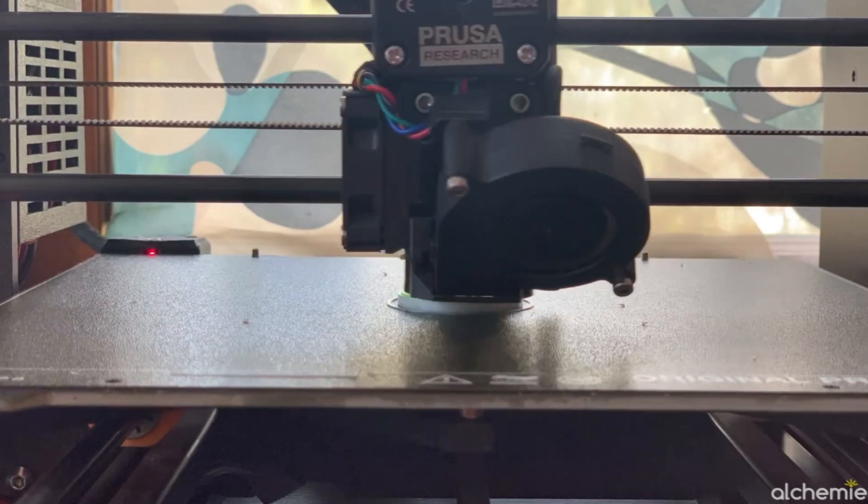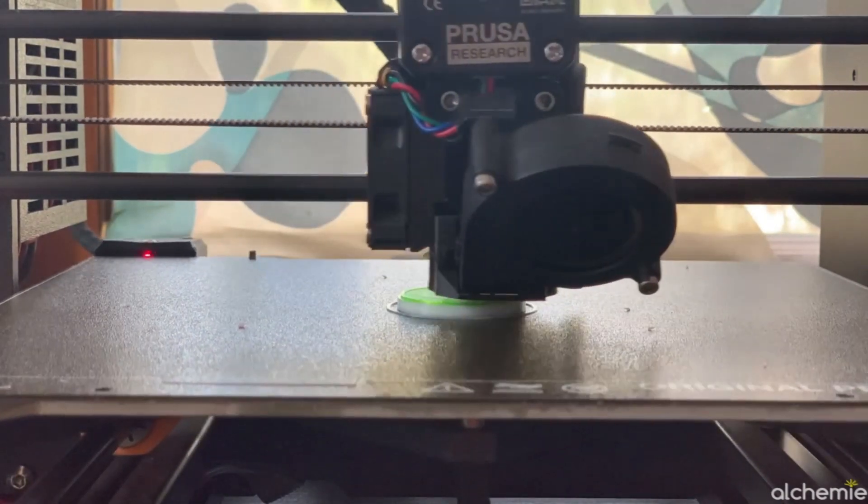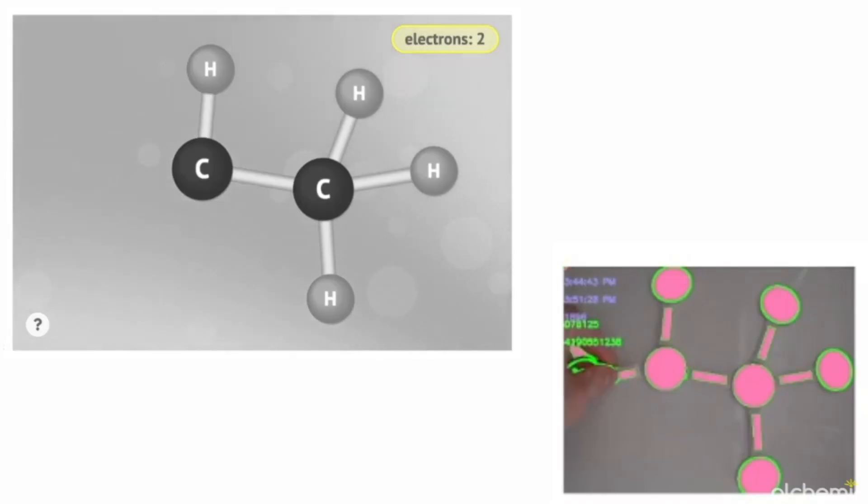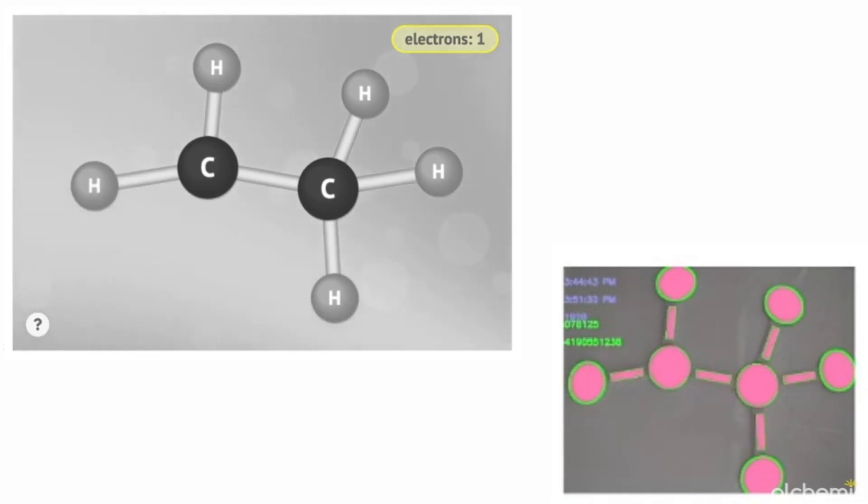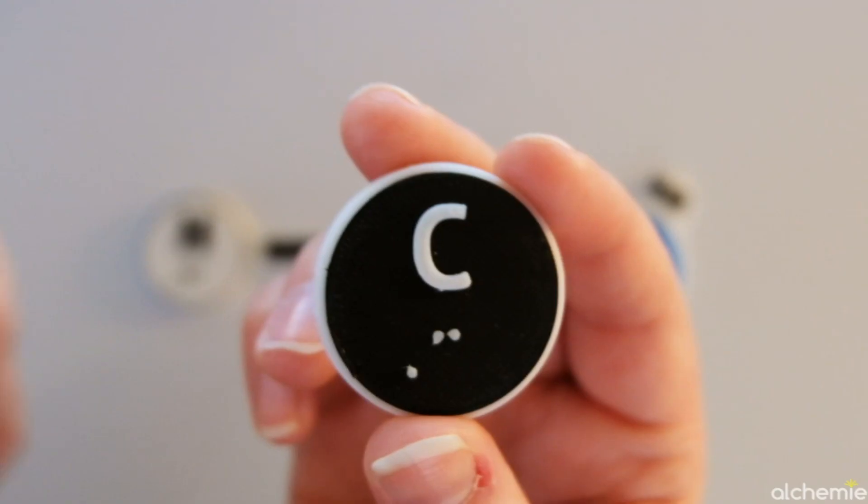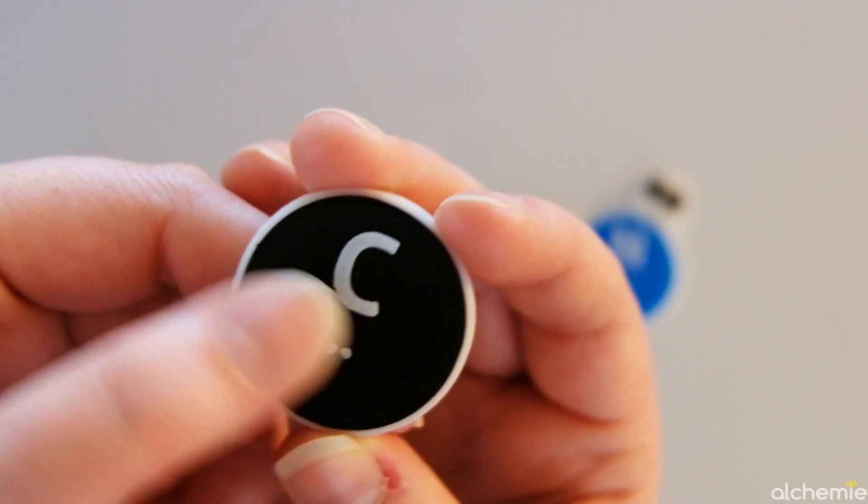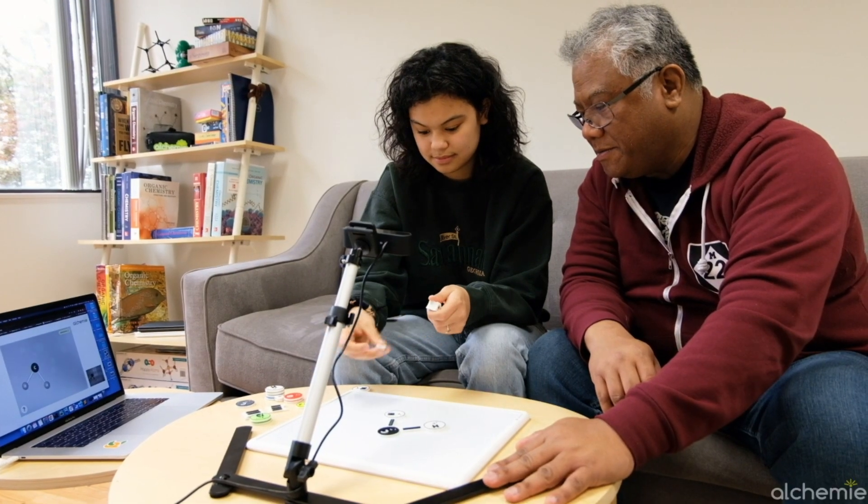In our first version of Cassie, we designed, tested, and 3D printed the tactile pieces. We also developed the software to recognize the shape and color of the atoms, bonds, and electrons. Instead of a mouse or a trackpad, these tactile manipulatives are a different interface that can be used by both sighted and visually impaired students for a multi-sensory learning experience.